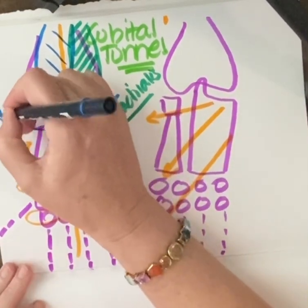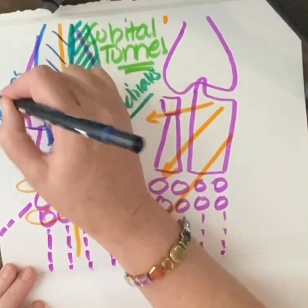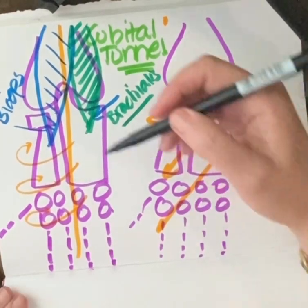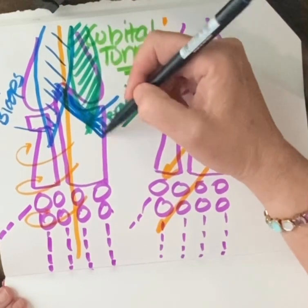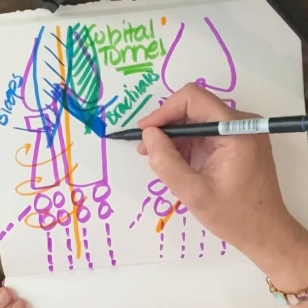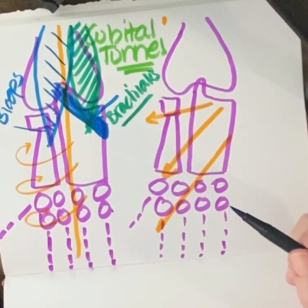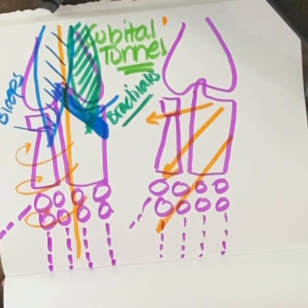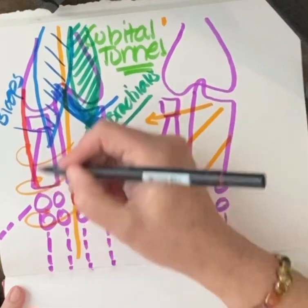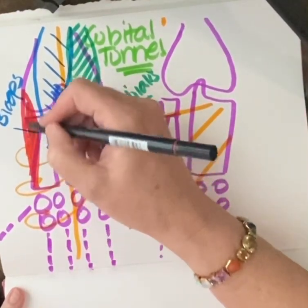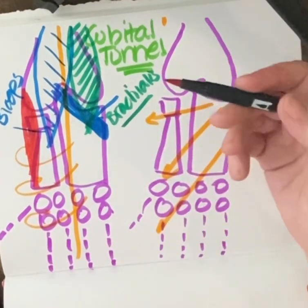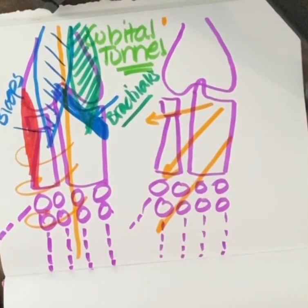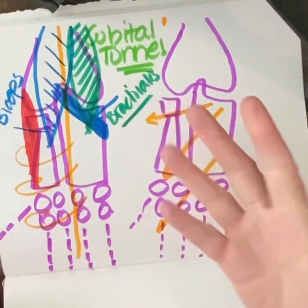And then what's interesting is we also have the bicep aponeurosis — it kind of comes over here, and a lot of times you'll see a little indent in the arm right there. So we have all these structures nice and balanced, and we don't want to leave out brachialis because he is a key player in this. We also have anconeus in the back and tricep. If everything's balanced, the alignment should stay right.